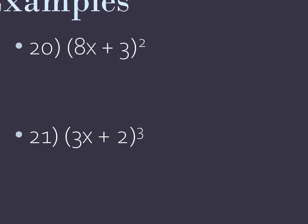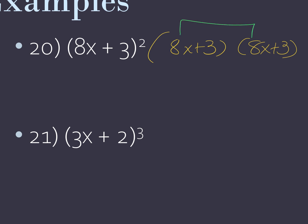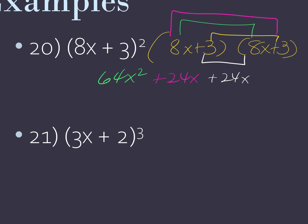So we have 8x plus 3, and it's squared. Again, don't just try to square 8x and 3. We're going to write it twice and distribute — or FOIL. So 8x plus 3, 8x plus 3. We're going to multiply first — 8x times 8x gives me 64x squared. Then distribute the 8x to the 3, which gives me 24x. The two inside ones — 24x. And then finally last — 3 times 3 is 9. The middle terms — we can combine them — so this gives me 48x. I'll rewrite the 64x squared, and then the 9. And you're done.